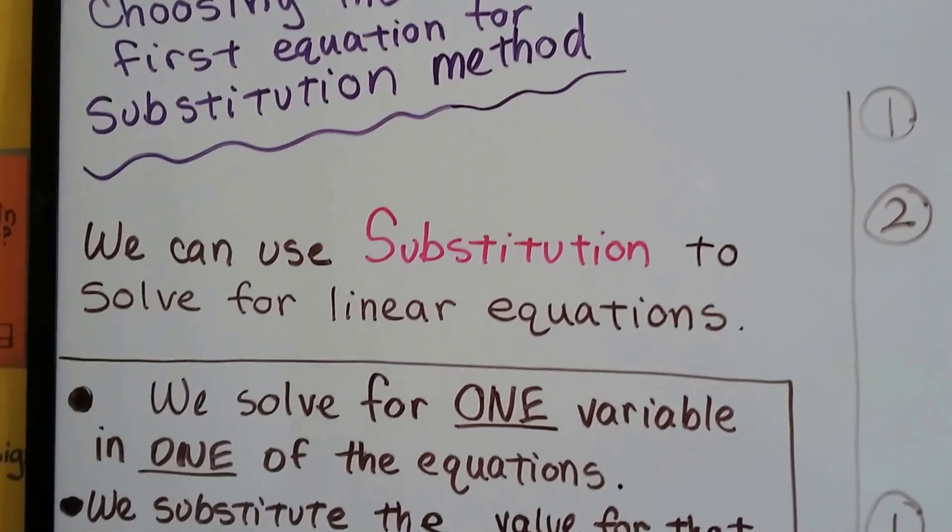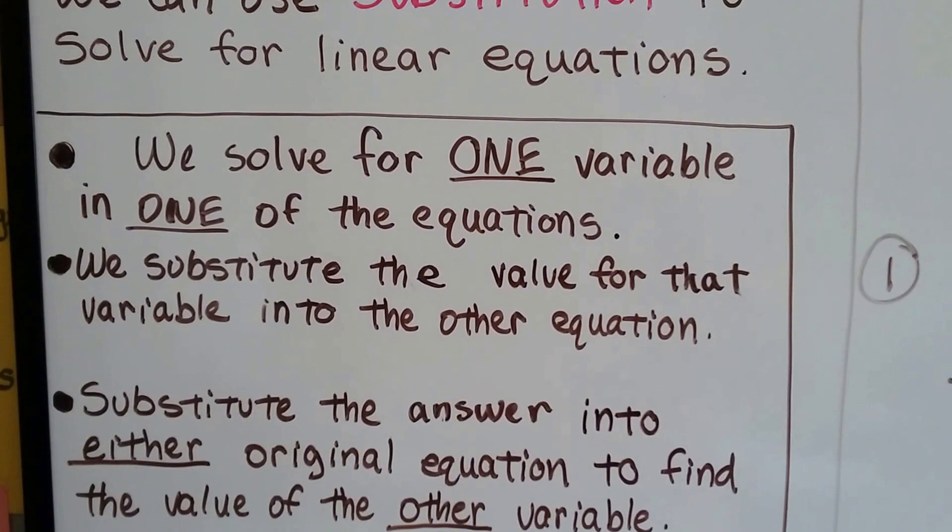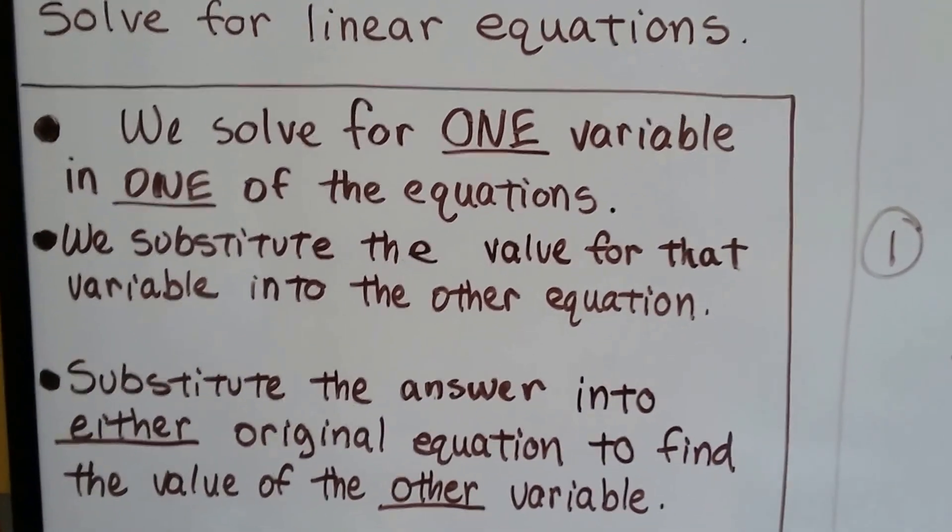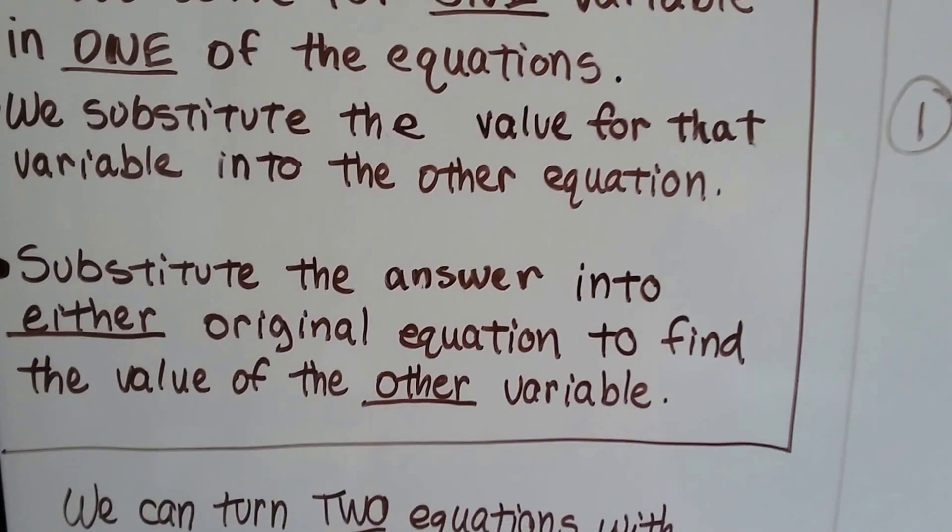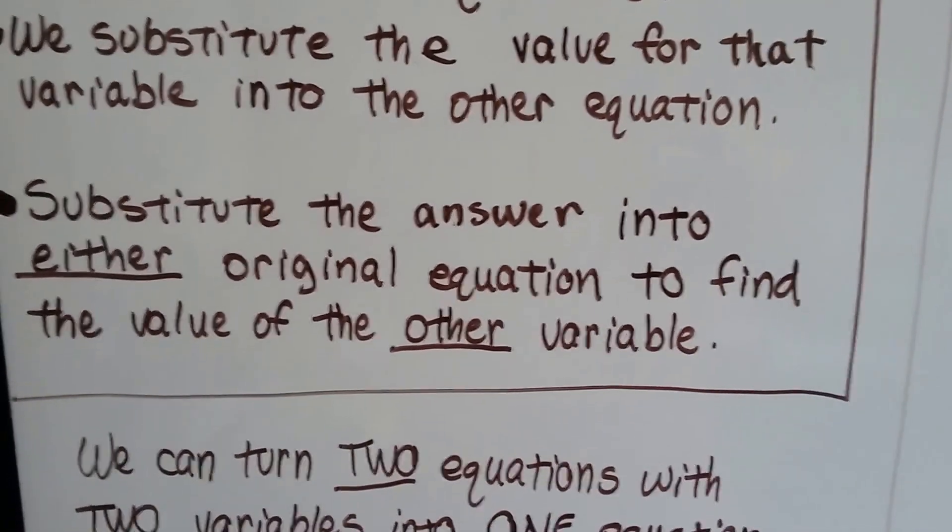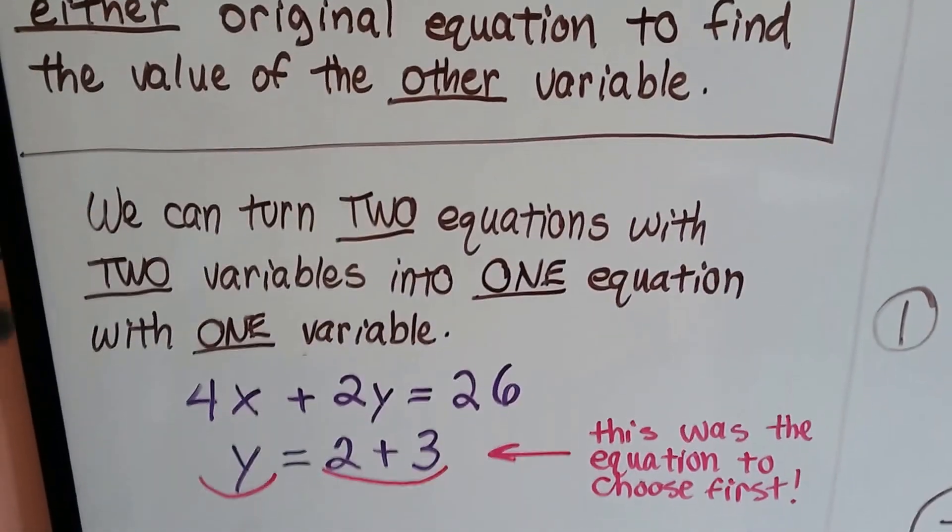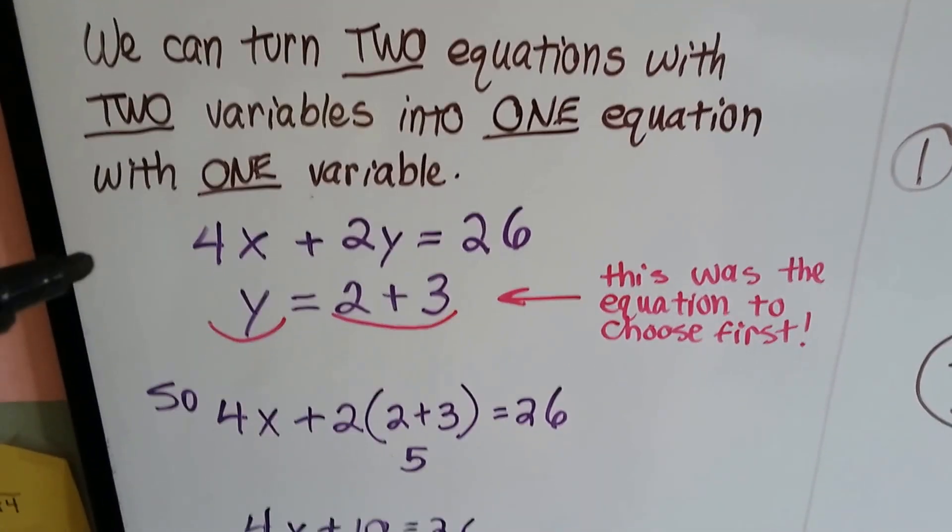We use substitution to solve linear equations. You solve for one variable in one of the equations, and we substitute that value for the variable in the other equation. We substitute the answer into either original equation to find the value of the other variable. So what we're doing is turning two equations with two variables into one equation with one variable.